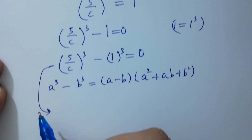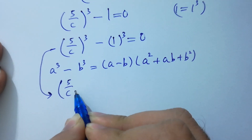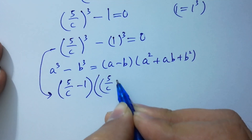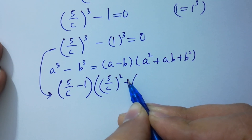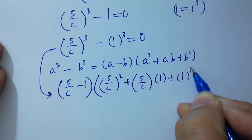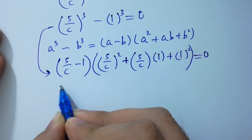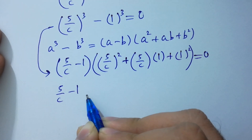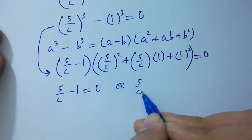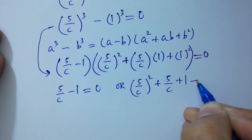So we have (5/c minus 1) times ((5/c)² plus (5/c)(1) plus 1²) equals 0. Either 5/c minus 1 equals 0, or (5/c)² plus 5/c plus 1 equals 0.